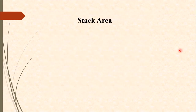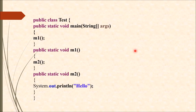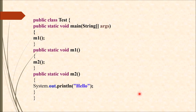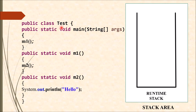Now I will talk about the stack area. Stack area is mainly responsible for storing local methods and local variables. Consider this example: there is one class Test, and inside the main method I am calling m1 method, m1 is calling m2 method, and inside m2 we are just printing a hello text. After running class Test, internally one thread will be created and one runtime stack will be created inside this stack area.